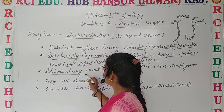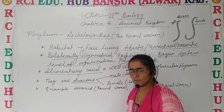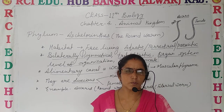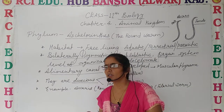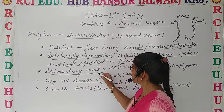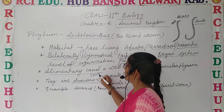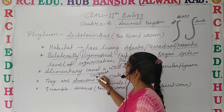They are pseudocoelomate — it means they do not have a true coelom but have a pseudocoelom. Regarding the alimentary canal, the digestive system can be complete or incomplete — two types exist.